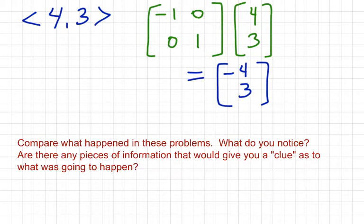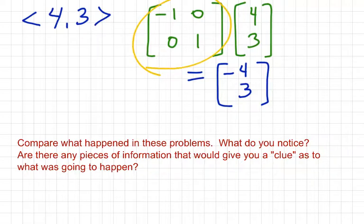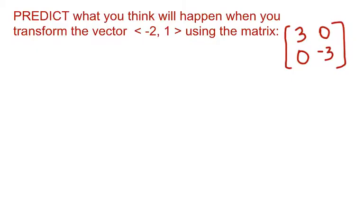Compare what happened in these three problems. Are there pieces of information that give you a clue as to what is going to happen? It has to do with the transformation matrix — there are numbers in there to indicate what will happen. Look at the three transformation matrices: when there was a reflection, what do you notice? When the length changed, what do you notice? Is there a connection? Before we graph the next one, pause the video and write down what you predict will happen when we transform the next vector using the given matrix.